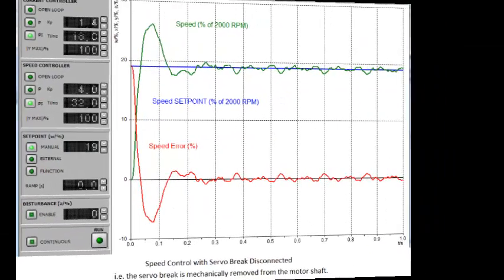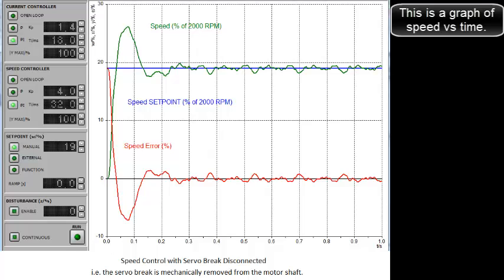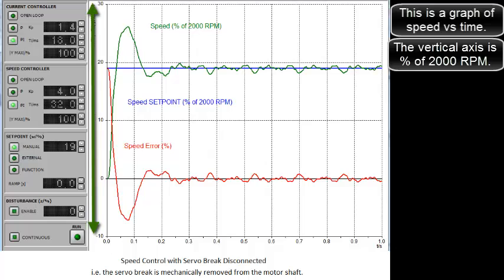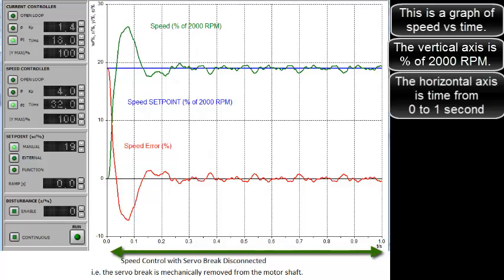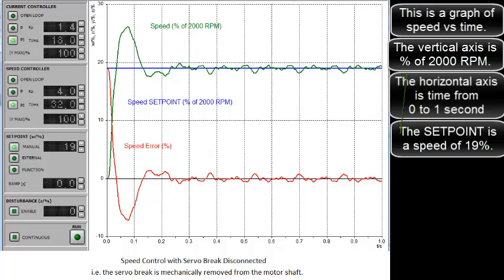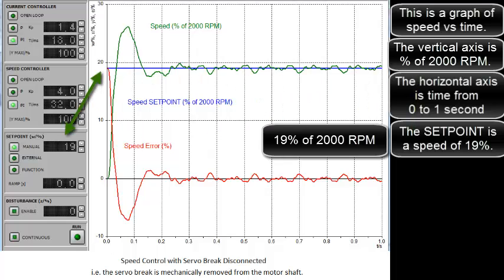This is a graph of speed versus time. The vertical axis is percent of 2,000 RPM. The horizontal axis is time from zero to one second. The set point is a speed of 19%, it's 19% of 2,000 RPM.